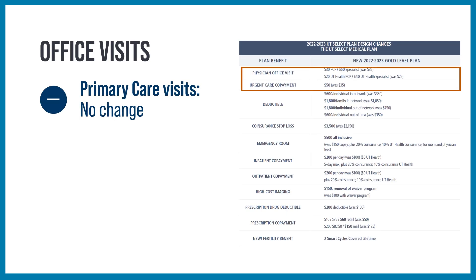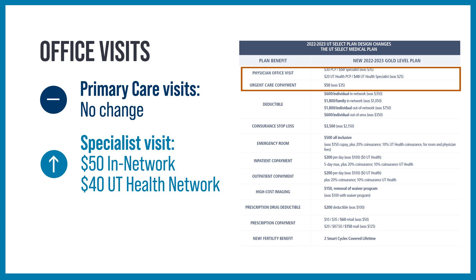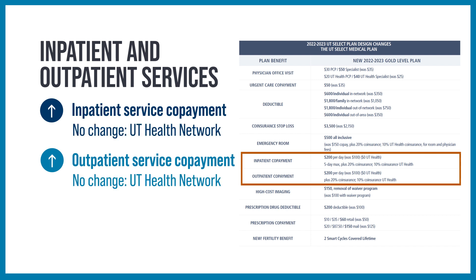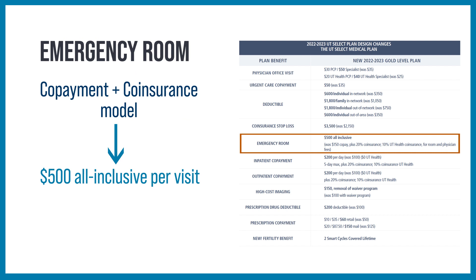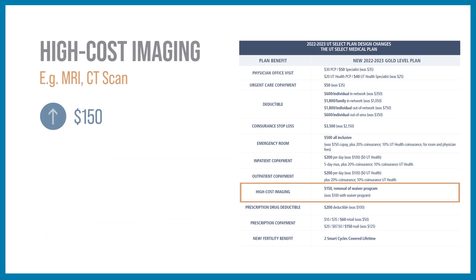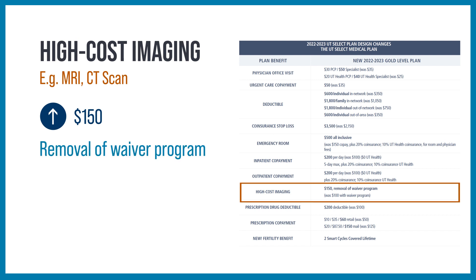Primary care physician visit costs do not change. Co-payments for a specialist visit increase to $50, or $40 when visiting a UT Health Network specialist. The co-payment for urgent care increases to $50 per visit. Inpatient and outpatient service co-payments increase except when receiving services through the UT Health Network. The portion of coinsurance covered by UT Select remains the same this year. The emergency room cost is moving from a co-pay and coinsurance model to a simplified $500 all-inclusive cost per visit. If you are admitted, refer to the inpatient services costs. High-cost imaging is now $150 with no waiver program.